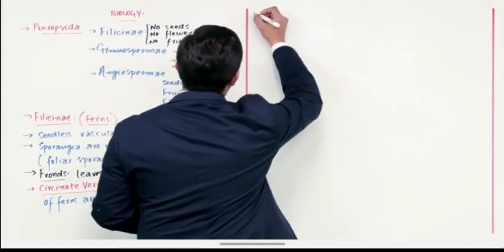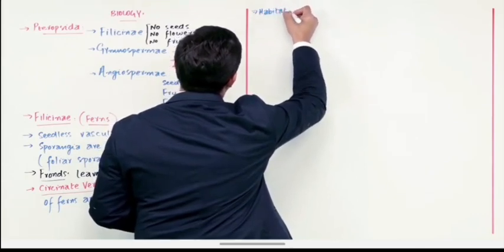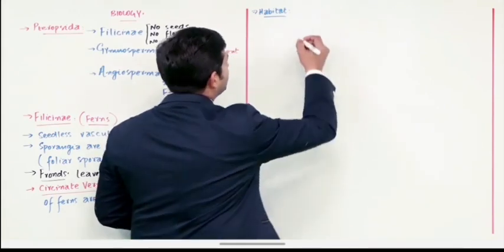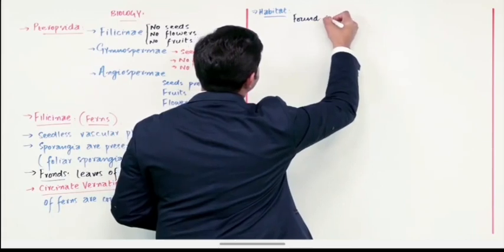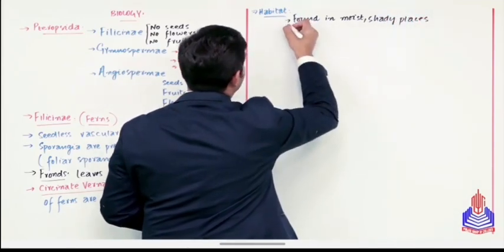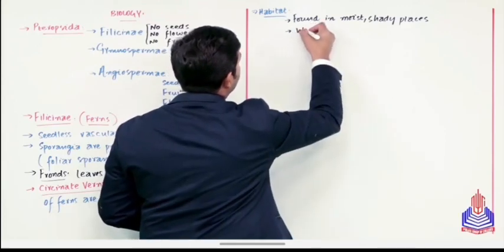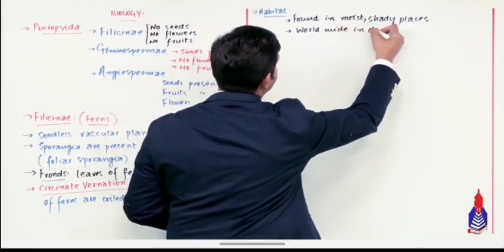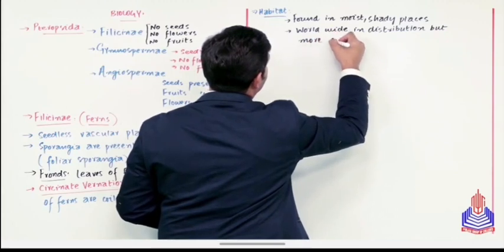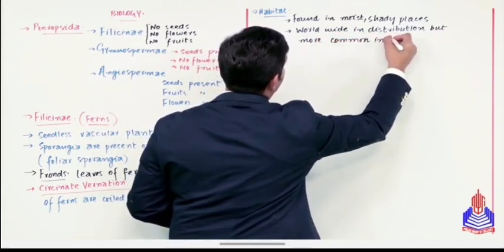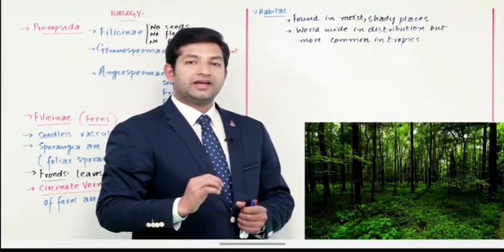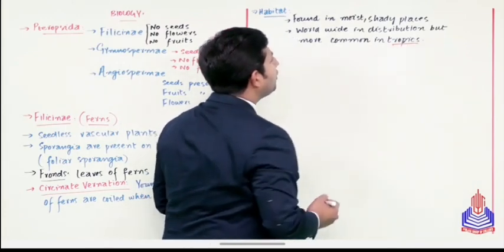फिर उसके बाद students, अगर हम next देखें, तो हम बात करते हैं habitat of Filicinae - कि ये जो Filicinae, ये ferns वगैरह हैं, ये हमें किस किसम के environment में नज़र आ सकते हैं। They can be found in moist and shady places. All right, फिर उसके साथ ही साथ हम ये कह सकते हैं कि they are worldwide in distribution but more common in tropics.